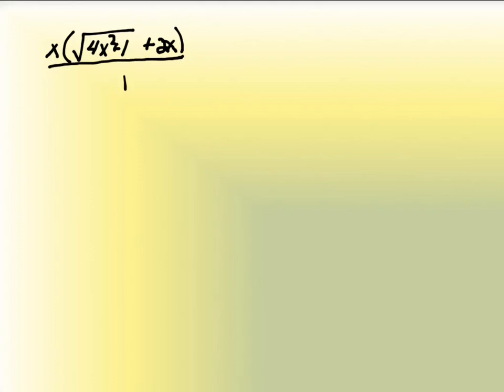Same function as before: x times the square root of 4x² + 1, plus 2x. This doesn't look like a fraction, but I'm going to make it look like one. When I'm plugging in values that get very large and negative, it's fine underneath the square root because I'm squaring them — so out of this I'm actually getting a positive infinity. And this piece right here, the 2x, is approaching negative infinity, which means the whole piece inside is approaching zero, because I have infinity minus infinity.